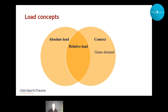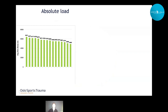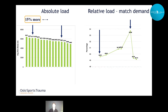If we apply the game demand context to get the relative load, things can look quite different from the absolute load. To illustrate, here's total distance from a football training session last year. The player on the left ran 6.2 kilometers, whereas the player on the right ran 5.4 — meaning 50% more distance covered by the player on the left. But when we apply the game demand context and look at how much this is relative to their individual game demand, we can see the player on the right actually has a higher percentage of his game demand covered. So the player on the left has run 8% less relative to his demand. It's important to keep both thoughts in mind.